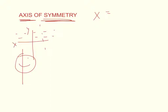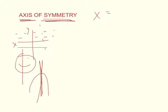So for instance, if you've got a quadratic equation, it's going to look like that and have a parabola. The axis of symmetry is going to cut straight through the middle of it. Now, what the axis of symmetry is going to be — it's going to be a line down our coordinate plane.